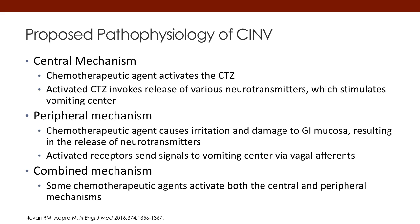These neurotransmitters, through the vagus nerve, feed up into the vomiting center, and you can also throw up from a peripheral mechanism, activating the vomiting center and causing the same vagal afference. Then there's the combined mechanism, where chemotherapy agents can both act centrally and peripherally, which is probably seen with many of the agents.